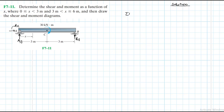Let's apply the equations of equilibrium. We'll have summation of moments about point A equal to zero, with clockwise being our reference. We have a minus 30, which is clockwise so therefore negative, then plus By times the lever arm which is equal to 6, equal to 0. Therefore, By is just going to be equal to 30 divided by 6, which gives us 5 kilonewtons.